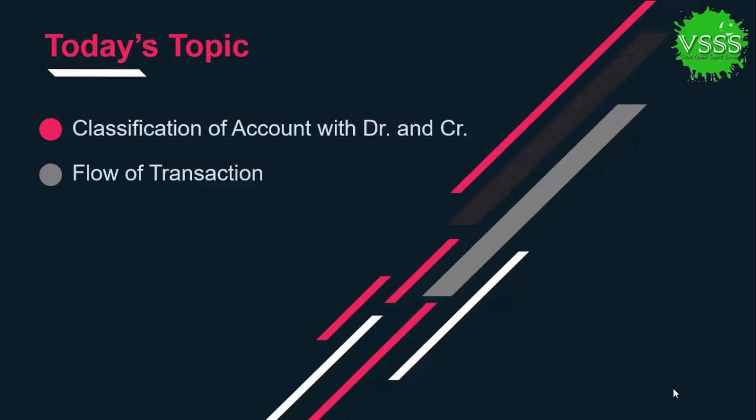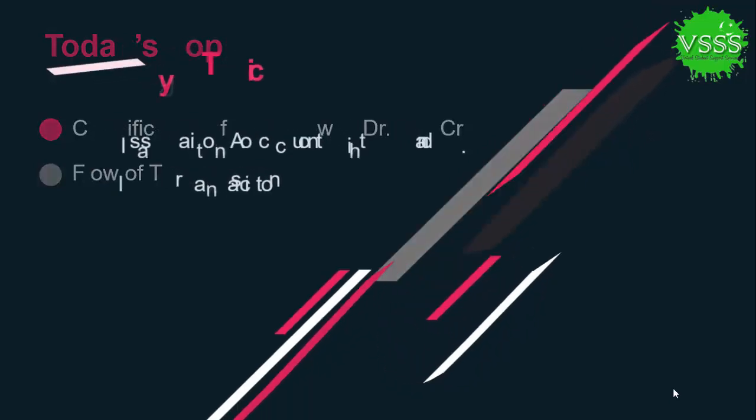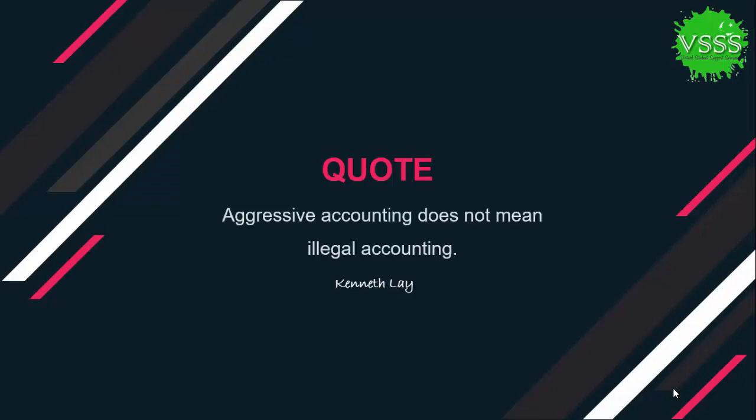In today's class we will take an example of classification of accounts with respect to debit and credit, and see how accounts will be debited and credited. In the last session we talked about different types of accounts — assets, liabilities, and expenses — and when they increase, whether they are debited or credited. Before starting, I will share a quotation: 'Aggressive accounting does not mean illegal accounting.'